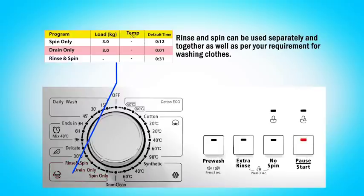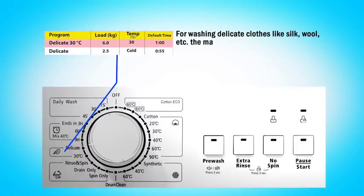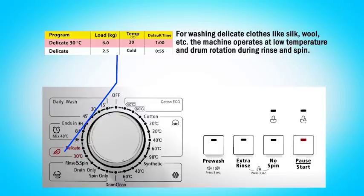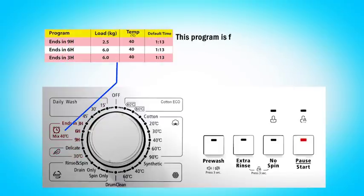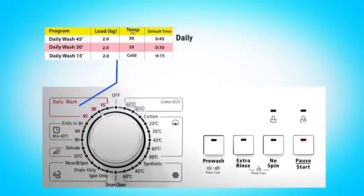Delicate: for washing delicate clothes like silk or wool, the machine operates at low temperature and drum rotation. During rinse and spin, delay is for the convenience of users as it delays the washing process for 3, 6, or 9 hours depending upon their requirement. Daily wash helps in washing clothes that are moderately dirty and less in number.